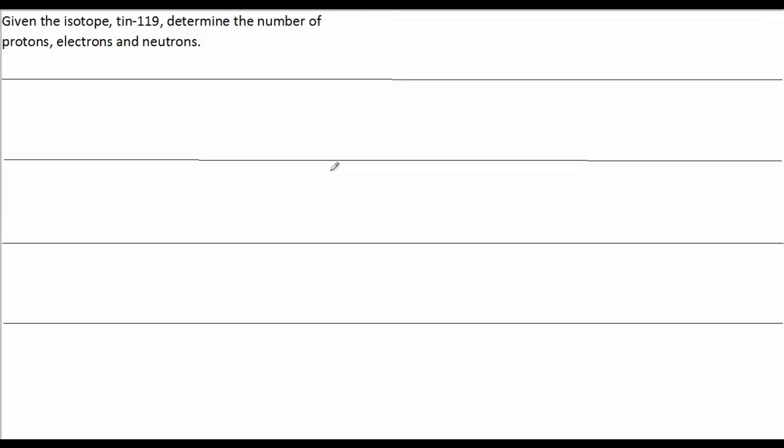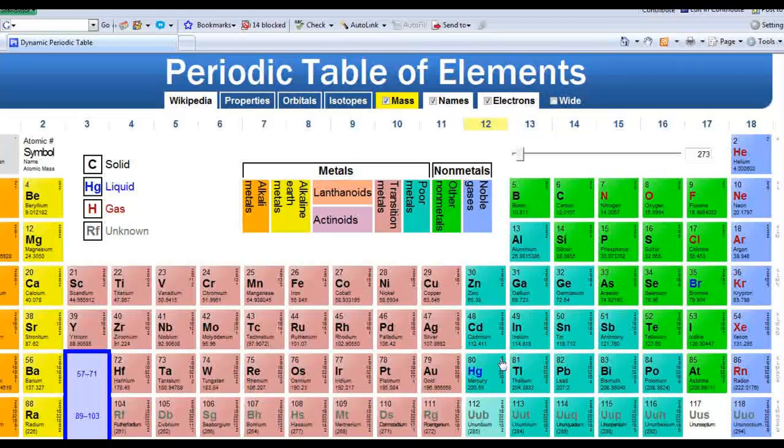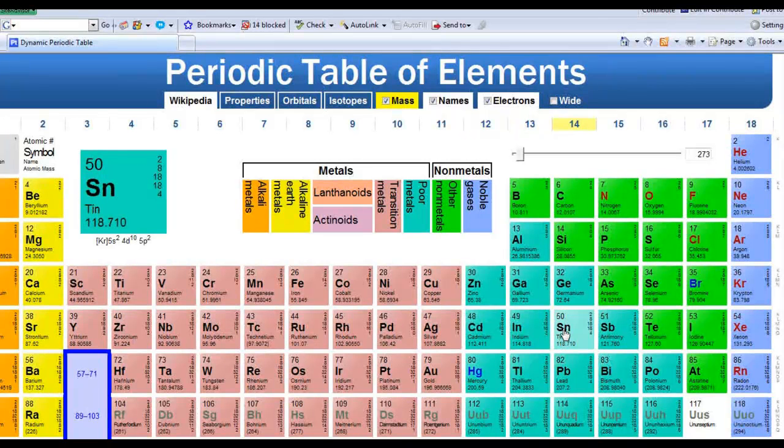Right off the bat we could find the number of protons and the number of electrons, because we're talking about Tin. And Tin is the atomic symbol of Sn. So if you go to the periodic table and you look up Tin, which down here has the atomic number of 50.